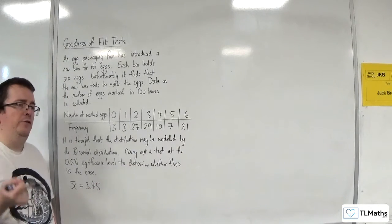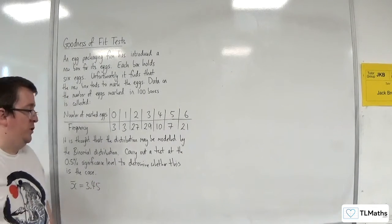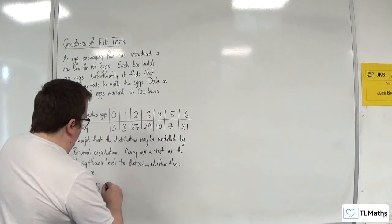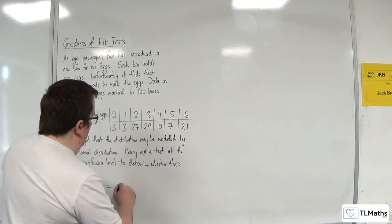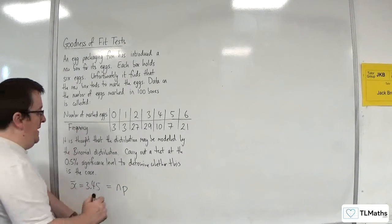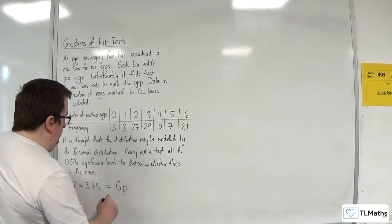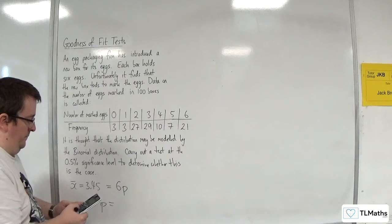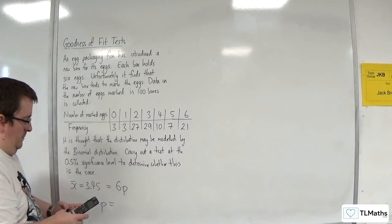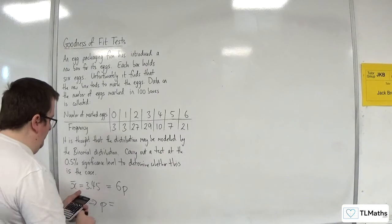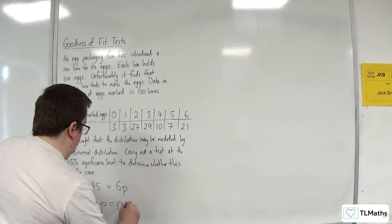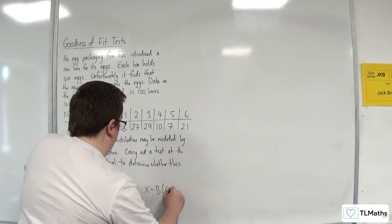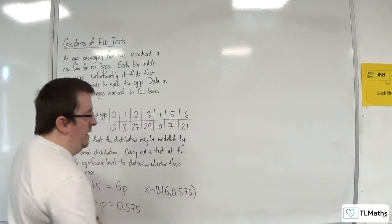Now, we know that the expected value of a binomial distribution is n times p. So 3.45 has got to be equal to n times p. Now, n, remember, is 6. So p is going to be 3.45 divided by 6, and that's 0.575. So we now have the binomial distribution that we're working with.